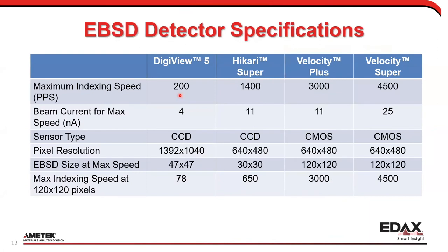Comparing CCD versus CMOS, there's a very big difference. The DigiView 5 is our older EBSD system — very slow but very high resolution — running at 200 frames per second. It doesn't require much beam current because it's highly sensitive. The Hikari runs about 1,400 to 1,500 patterns per second, requires around 11 nanoamps, and uses a CCD camera at 640 by 480 resolution.